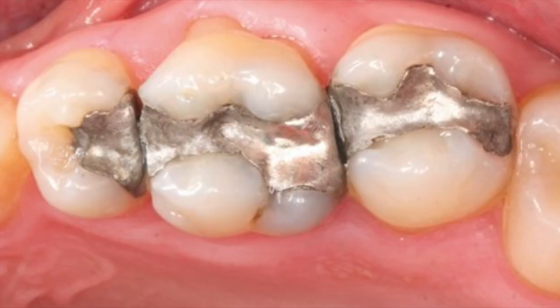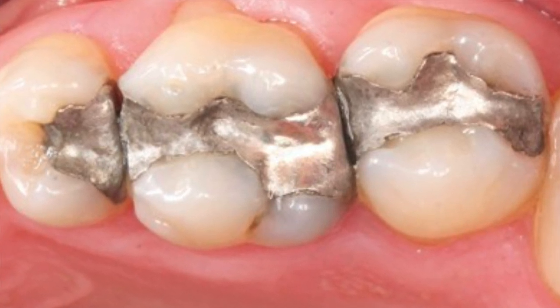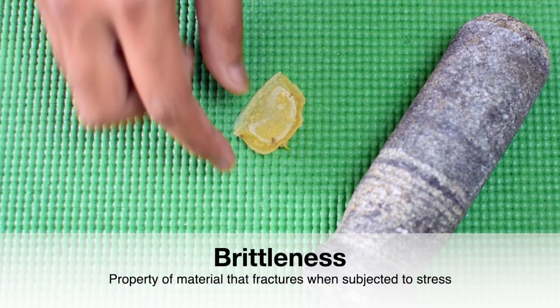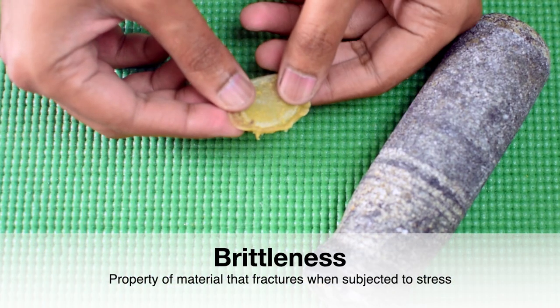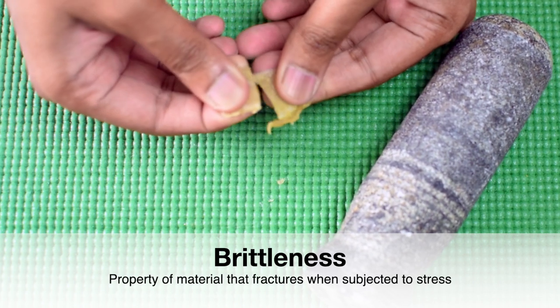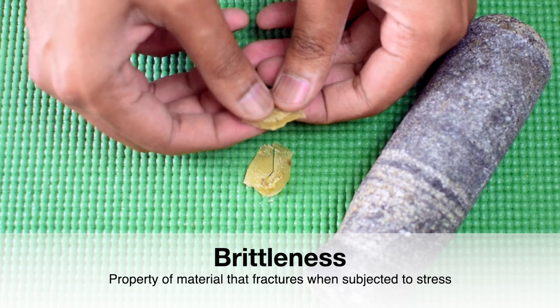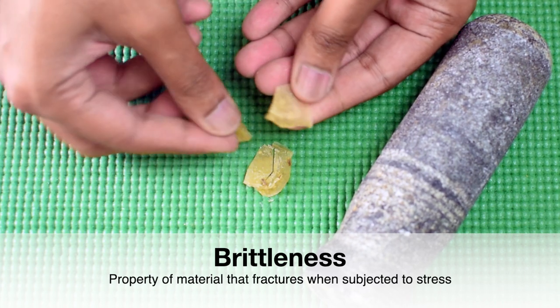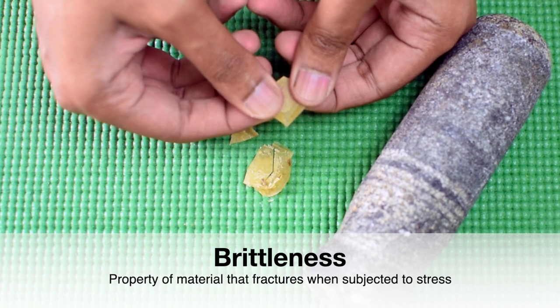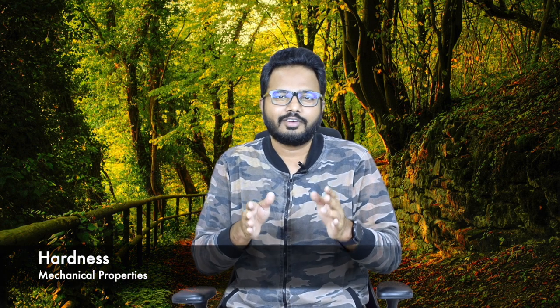The best example in a dental material perspective is amalgam, which you're all very familiar with. Brittleness describes the property of a material that fractures when subjected to stress but has little tendency to deform before rupture. Brittle materials are characterized by little deformation, poor capacity to resist impact, high compressive strength, and low tensile strength — the same as amalgam.